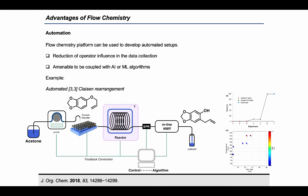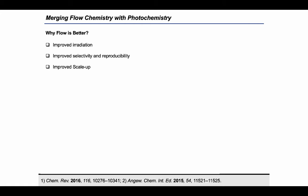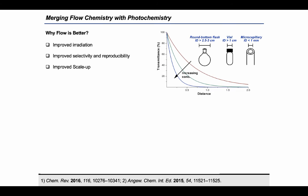Continuous flow technology finds another impactful application when it's combined with photochemistry and electrochemistry. In the context of photochemical reactions, continuous flow guarantees a more homogeneous irradiation of the reaction mixture, leading to more selective and reproducible transformations. This effect can be explained by the Lambert-Beer law. The shorter path of the tubing allows a more uniform distribution of photons compared with the canonical reaction vessels where at the center of the reactor the absorption rapidly decreases.